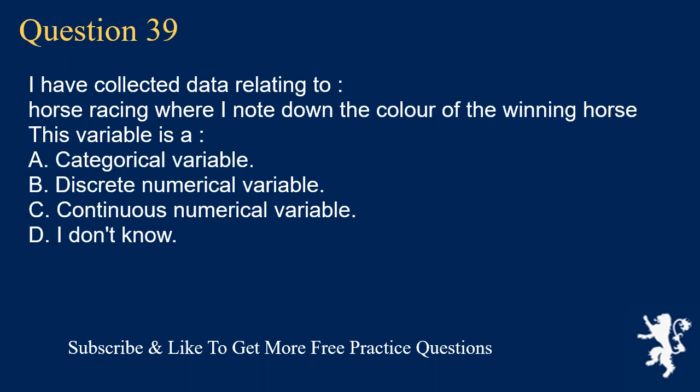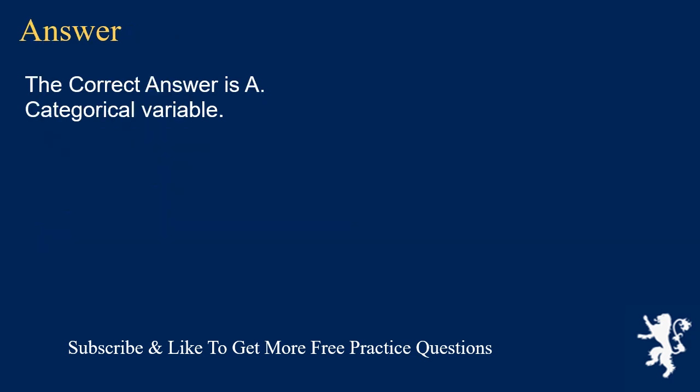Question 39: I have collected data relating to horse racing where I note down the color of the winning horse. This variable is A. categorical variable, B. discrete numerical variable, C. continuous numerical variable, D. I don't know. The correct answer is A, categorical variable.